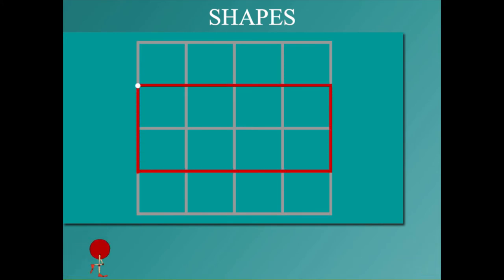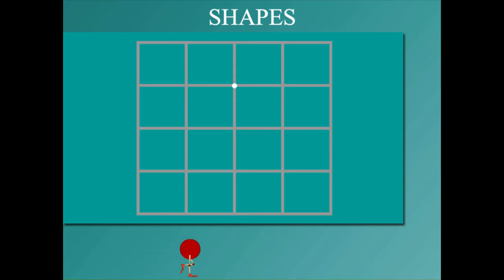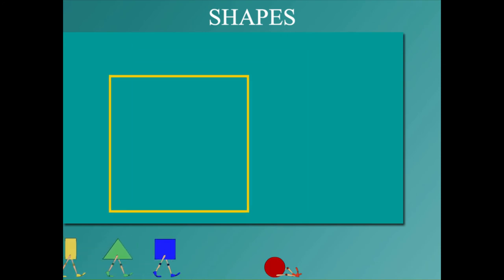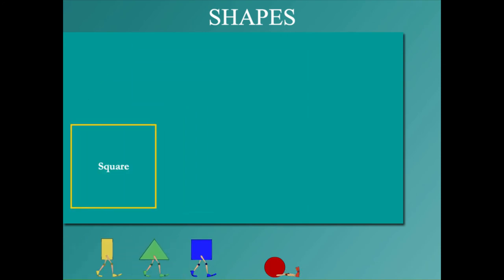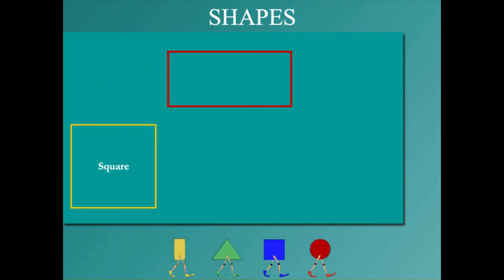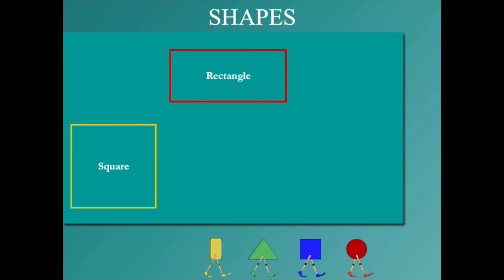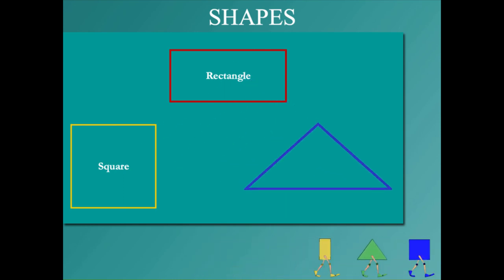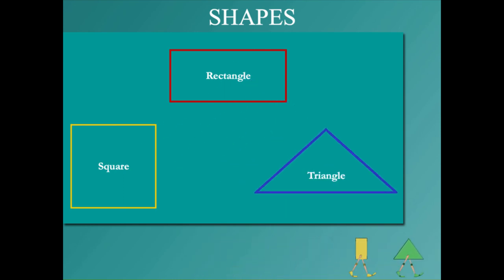The pointer is making a triangle with three straight lines. Here is a yellow square, a red rectangle, and a blue triangle.